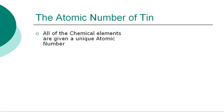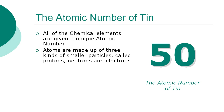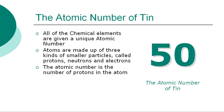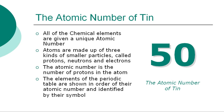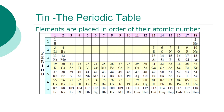All of the chemical elements are given a unique atomic number. The atomic number for tin is 50. Atoms are made up of three kinds of smaller particles, called protons, neutrons, and electrons. The atomic number is the number of protons in the atom. The chemical elements of the periodic table are shown in order of atomic number and identified by their symbol. The periodic table is a chart showing the symbols and the atomic numbers of all known elements, such as tin, in one large grid.